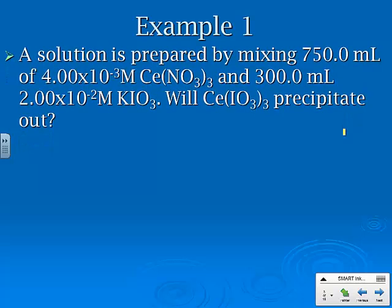For example, a solution is prepared by mixing 750 mLs of 4.00 times 10 to the negative third M Ce(NO3)3 and 300 mLs of 2.00 times 10 to the negative second M KIO3. What we're trying to answer is, will this compound precipitate out of solution? How the heck do we do that?